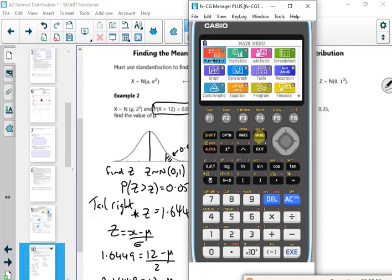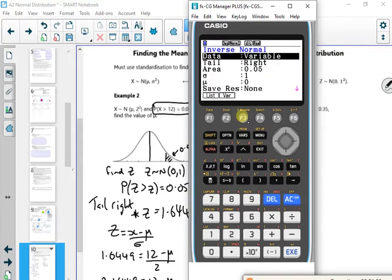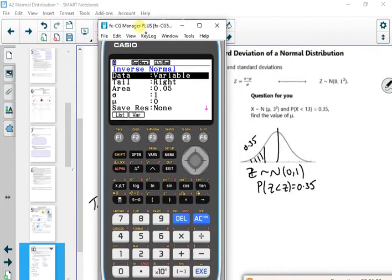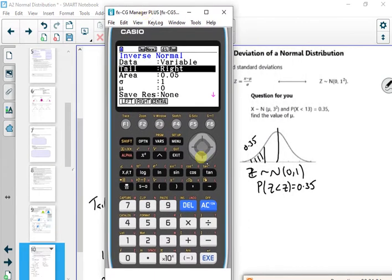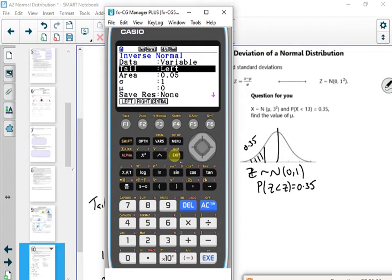Right, so if I do menu 2, distribution, normal, inverse. So if you look at the picture, it's a left-hand tail. The area's 0.35. Why is it just not working?